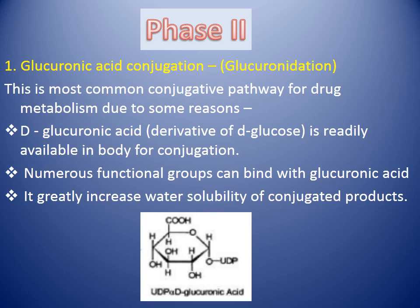Coming to glucuronic acid conjugation, that is glucuronidation. This is the most common conjugation for some reasons: first, D-glucuronic acid is a derivative of D-glucose and is readily available in the body for conjugation; second, numerous functional groups can bind with glucuronic acid; and third, it greatly increases the water solubility of the conjugated product. The structure of UDP-glucuronic acid is shown here, which can bind to different drugs by removing UDP.